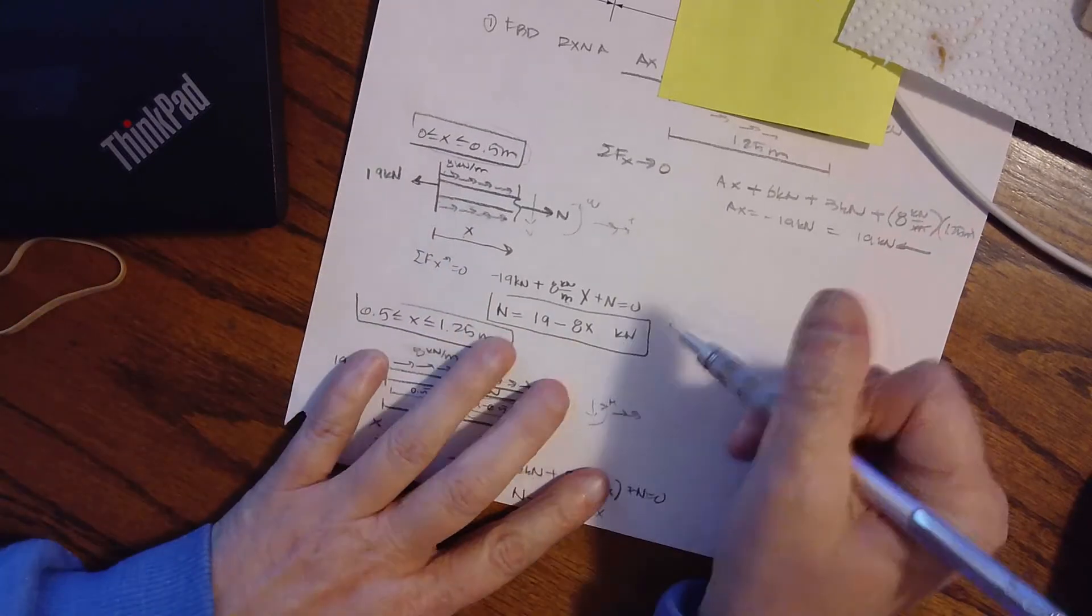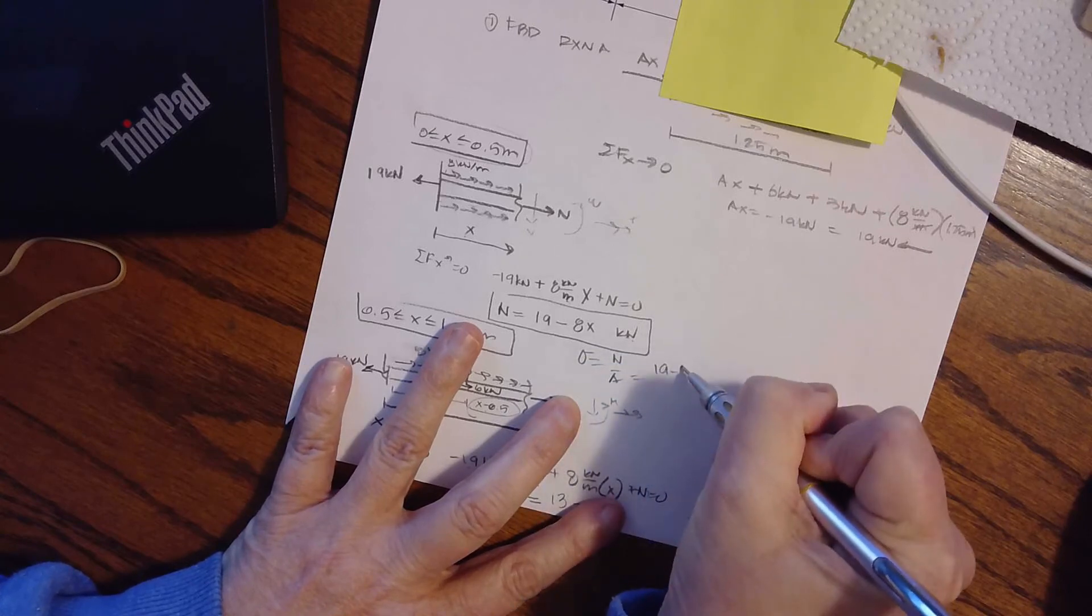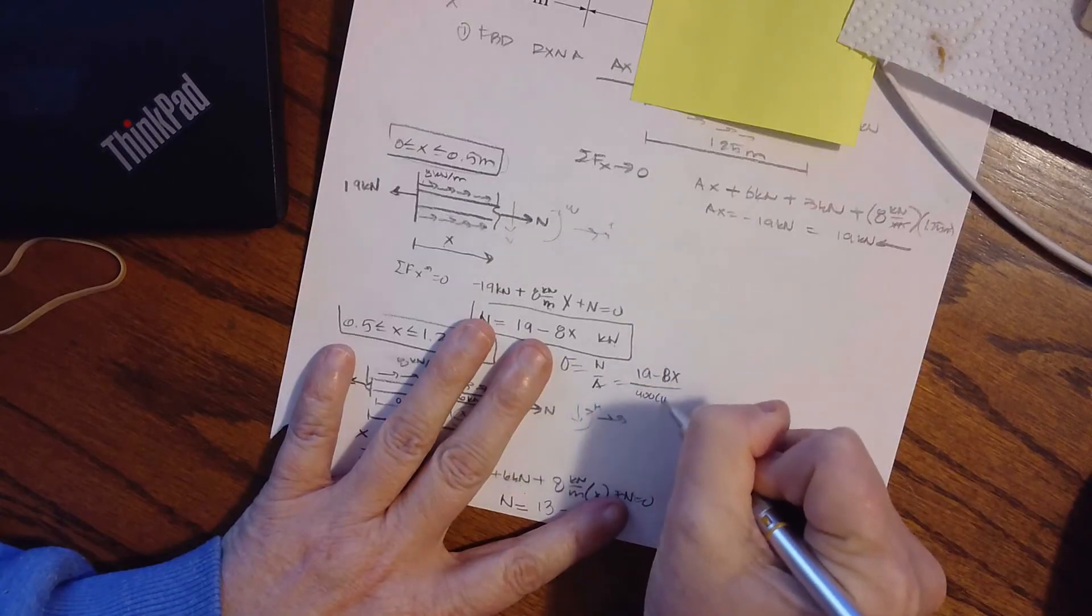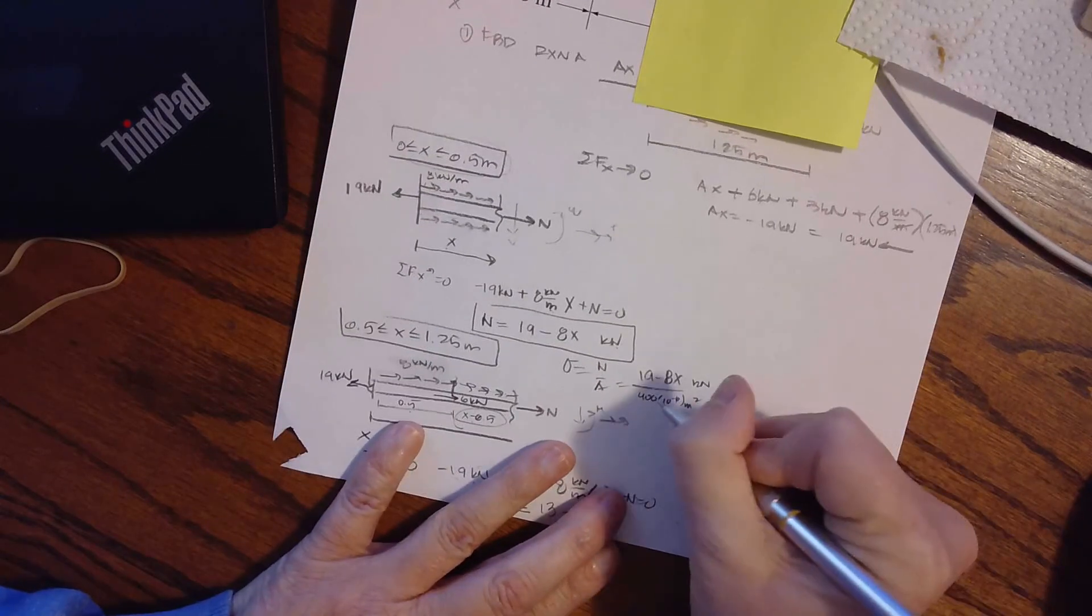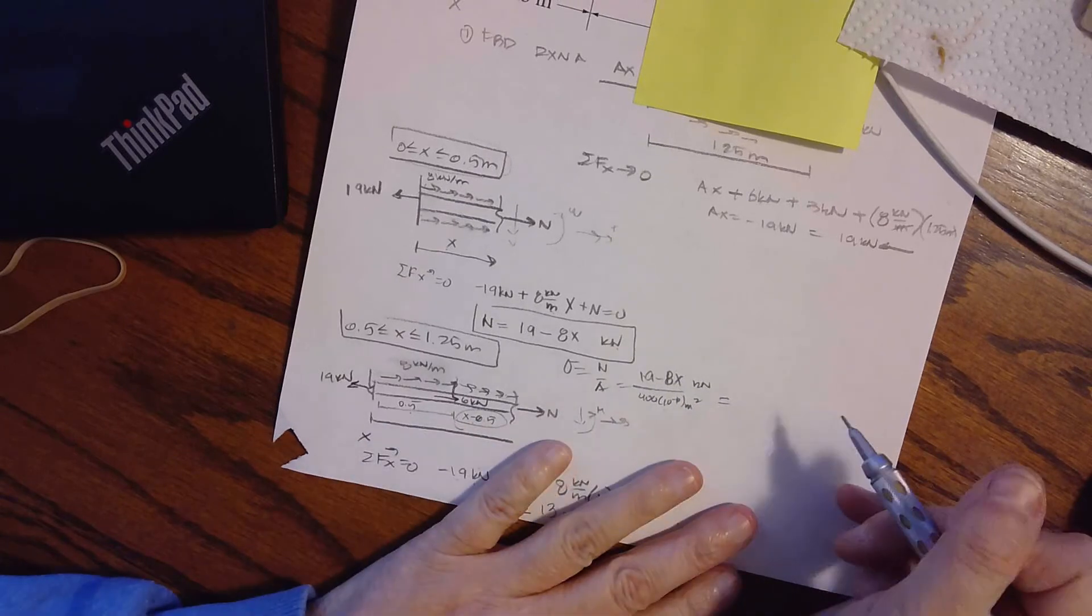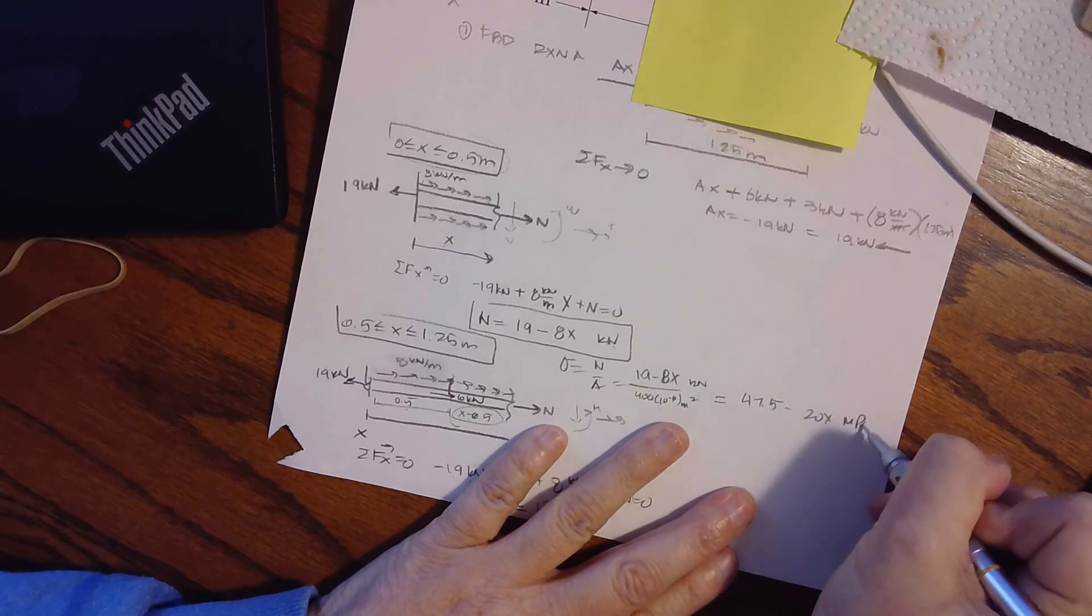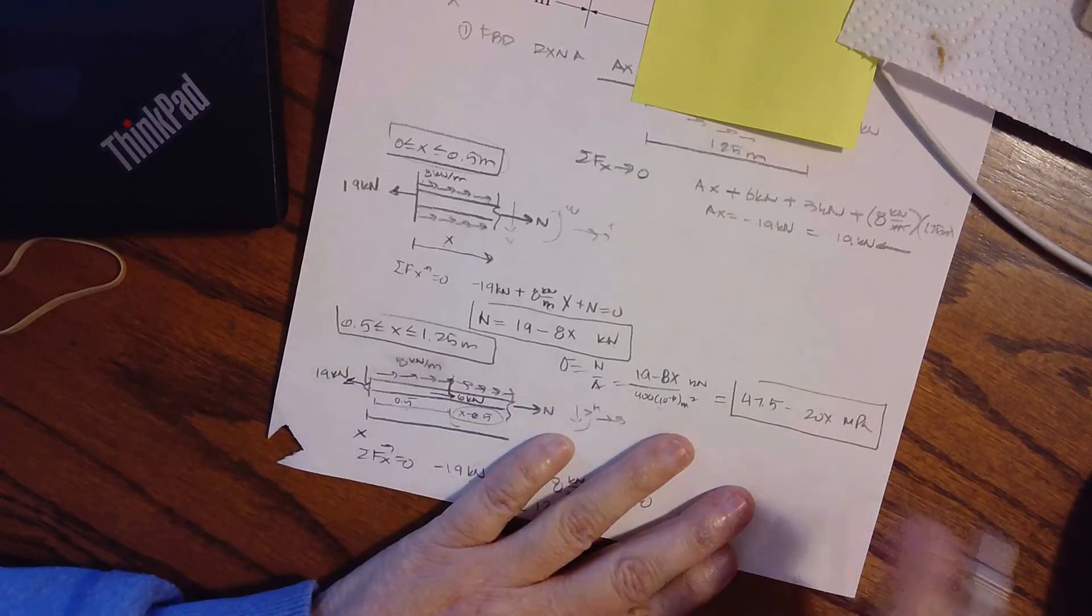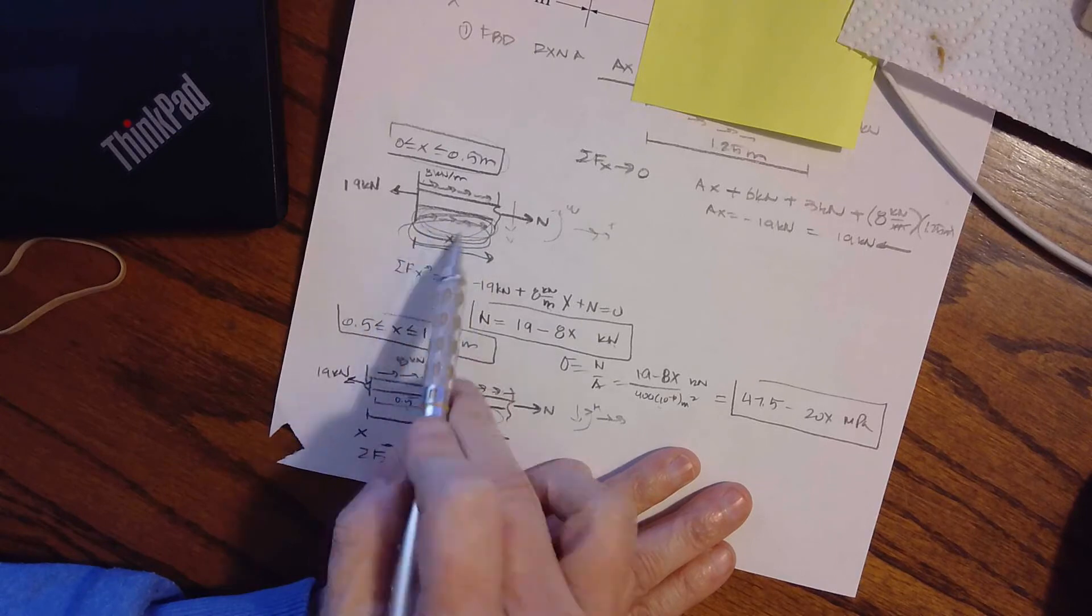It says, what is our stress? Well, if this is my normal force, then my stress is N over A. So I'm going to have 19 minus 8X divided by 400 times 10 to the negative 6 meters squared. This is in kilonewtons. And I can divide the 19 by 400 and I can divide the 8X by 400 and I will end up with a stress equation of 47.5 minus 20X megapascals. So I have a variable stress because I have a variable load. As we're working down that length, we're adding on that axial load is variable.